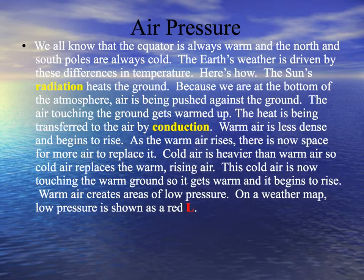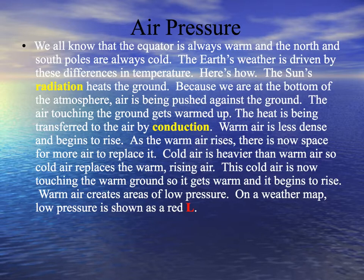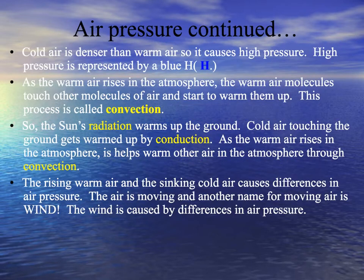The sun's radiation heats the ground up. Air touching this warm ground gets warmed up. This warm air begins to rise. As the warm air rises, colder air, which is more dense, sinks down and touches the ground. It touches the ground, it gets warmed up, and it begins to rise. So cold air is denser than warm air, so it causes high pressure.